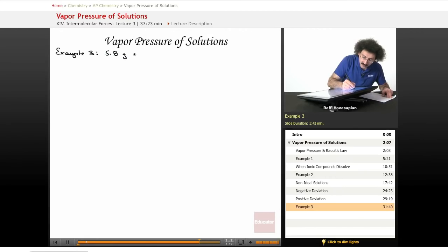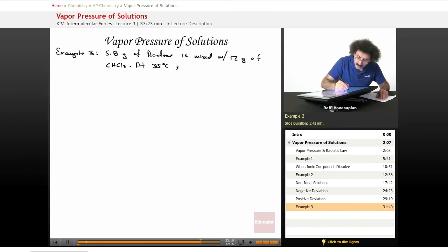0.8 grams of acetone is mixed with 12 grams of CHCl3. At 35 degrees Celsius, the measured vapor pressure of solution is equal to 265 Torr. Is this an ideal solution?